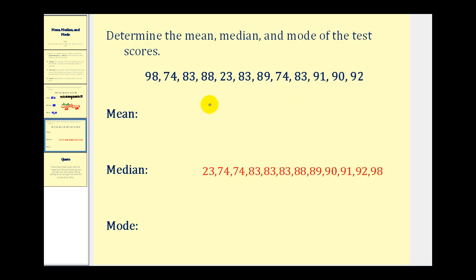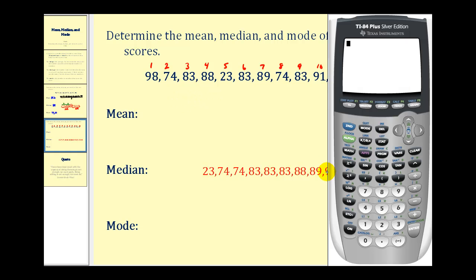Let's consider a similar situation where we have a bunch of test scores and we want to determine the mean, median, and mode. Here we have 12 data values, so we're going to find the sum and then divide by 12 to determine the mean. Going to the calculator — the last two values were 90 and 92 — we take this sum and divide by 12. So the average, or mean, is approximately 80.7.